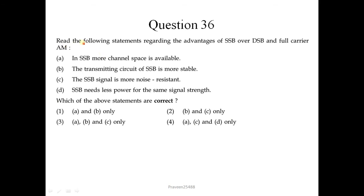Question number 36: regarding the advantages of SSB over DSB and full carrier AM. In SSB, more channel space is available — it is bandwidth efficient, so this is correct. The transmitting circuit of SSB is more stable — this statement is not correct. The SSB signal is more noise resistant — this is also correct. SSB needs less power for the same signal strength — this is also correct. So A, C, and D are correct; option number 4 is correct.